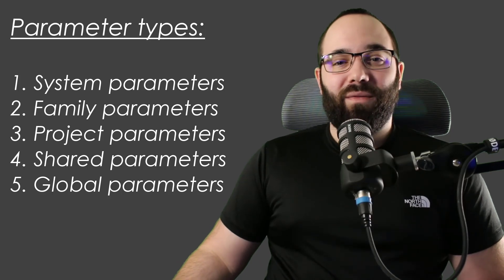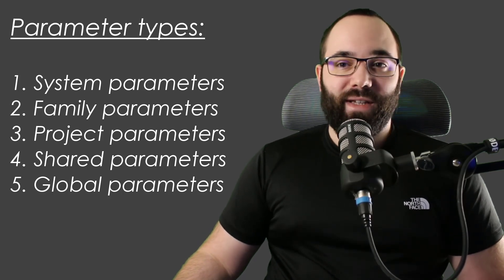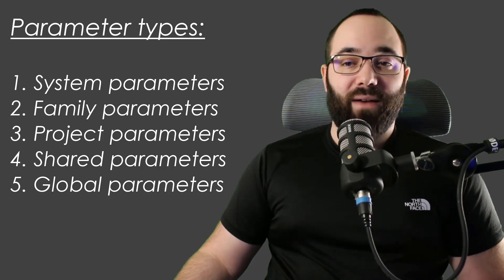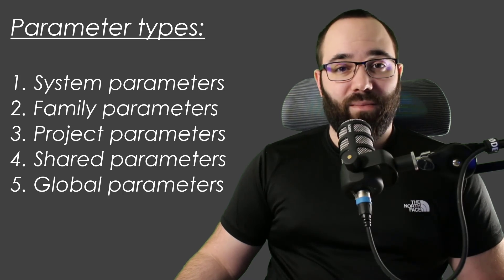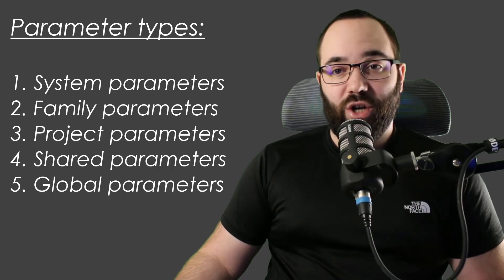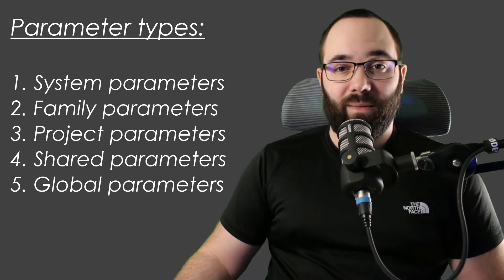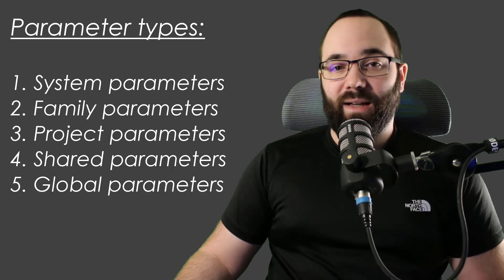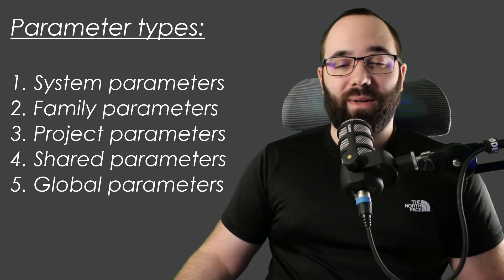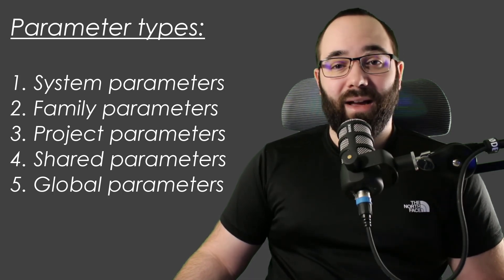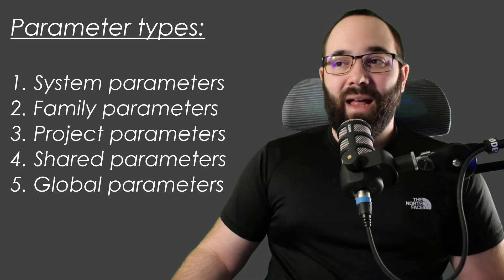There are five different types of parameters in Revit. We have our system parameters, family parameters, project parameters, shared parameters, and finally global parameters. And we're going to be explaining and creating all of those.